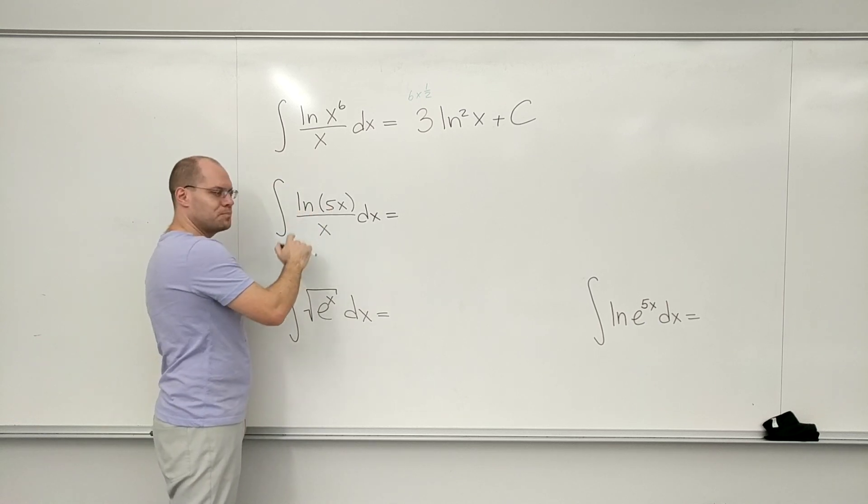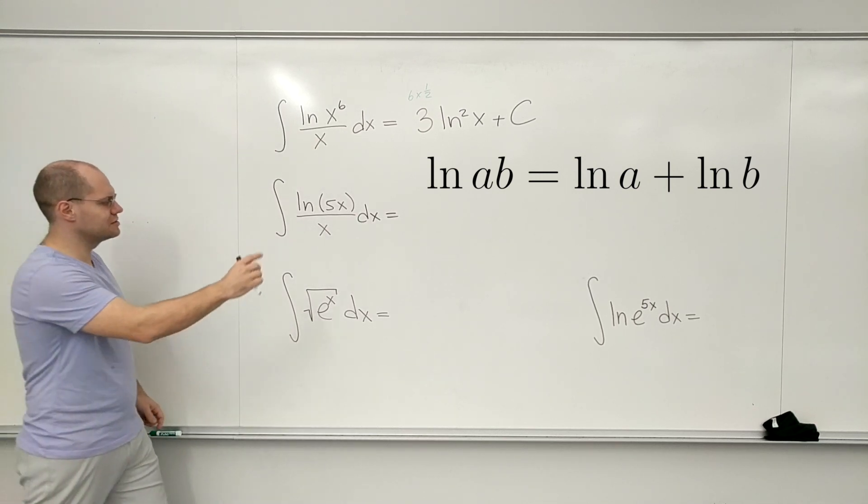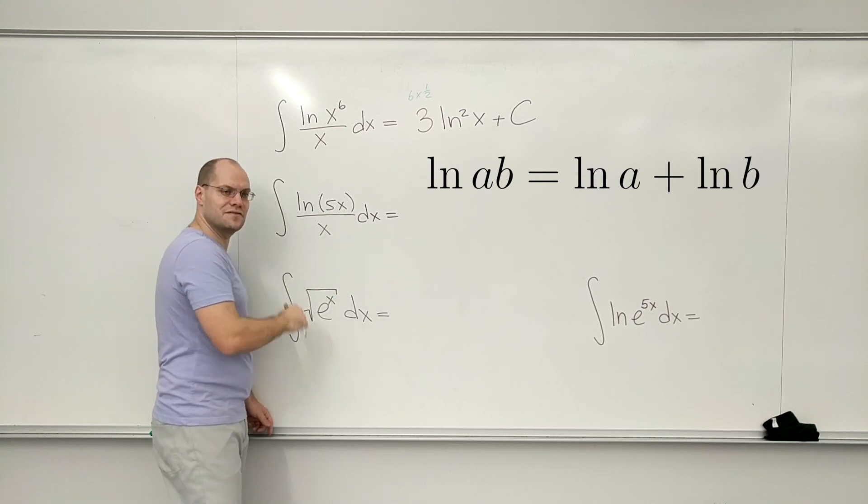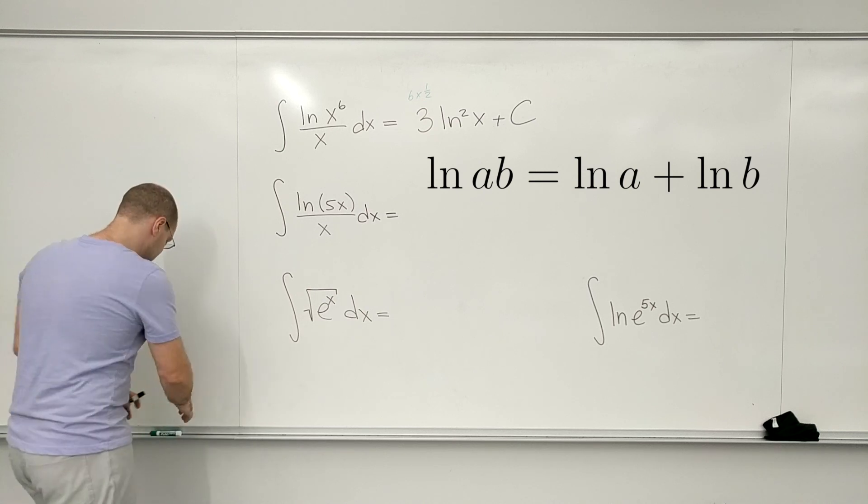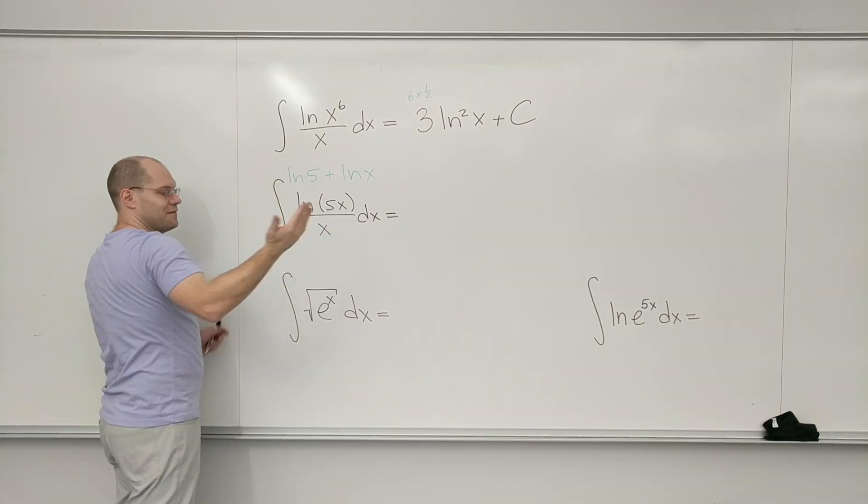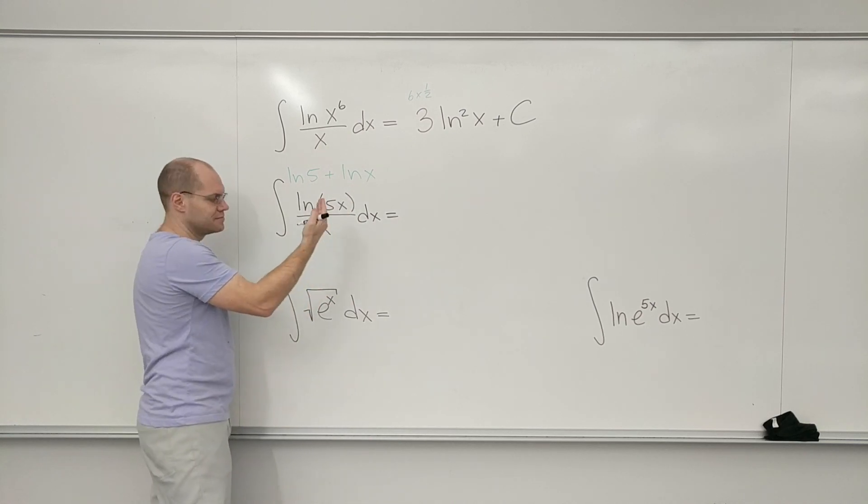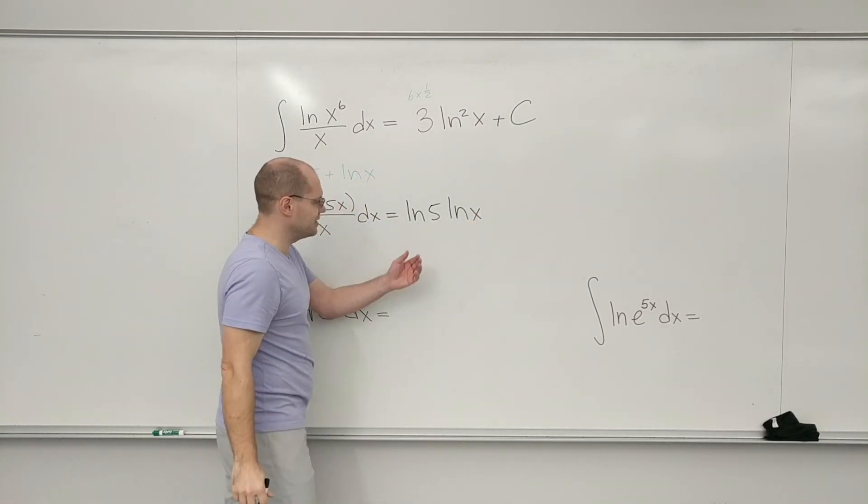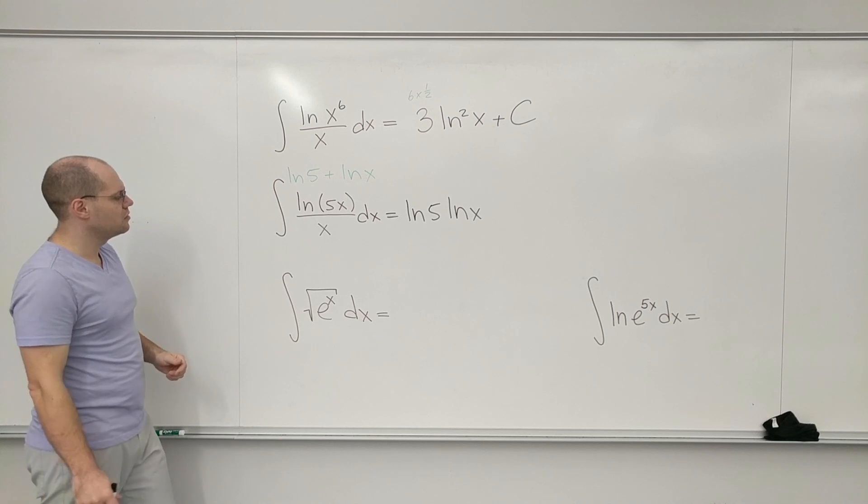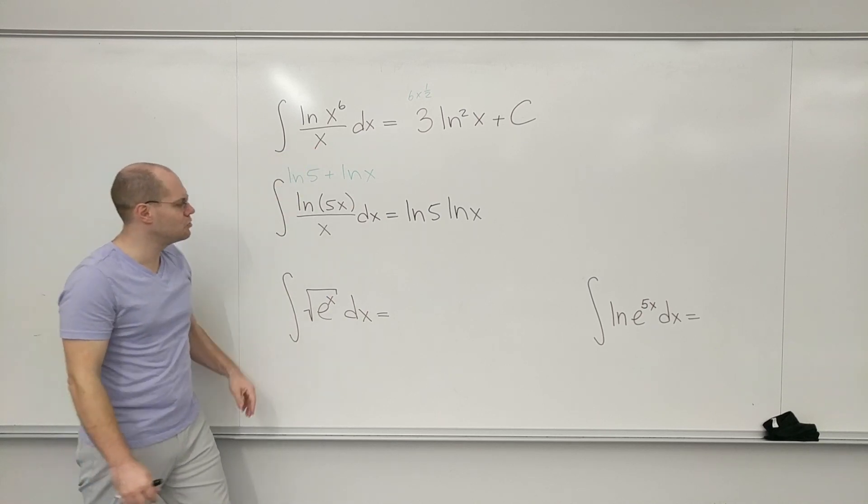Same thing here. Log of a product is the sum of logs. The two rules are really the same thing. So this is log of 5 divided by x, plus log of x divided by x. Log of 5 is just a multiplicative constant, it doesn't change anything. And then we just have the derivative of log. And you can actually recombine this back into log of 5x, plus log of x divided by x. And we just did that a moment ago.